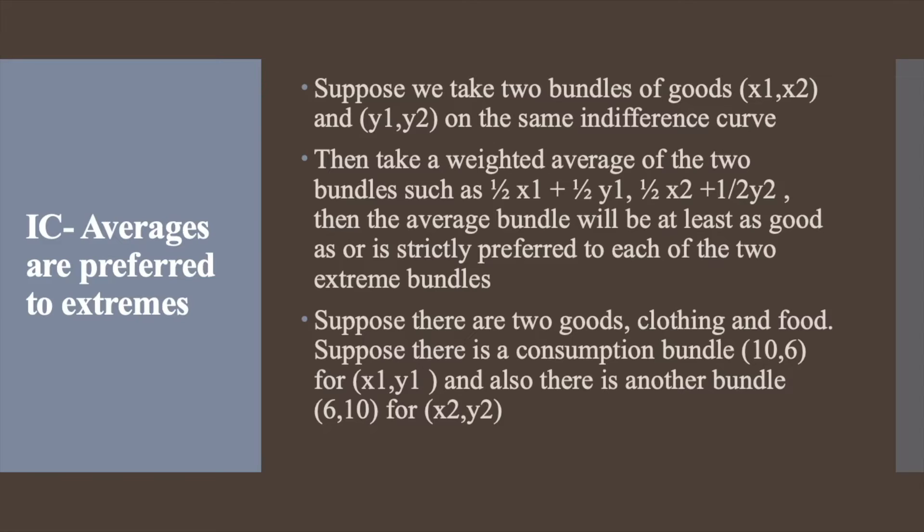Suppose there are two goods, clothing and food. There is a consumption bundle (10,6) for (x1, y1) where there is 10 units of clothing and 6 units of food, and also there is another bundle (6,10) for (x2, y2) where there is 6 units of clothing and 10 units of food. Here, one bundle contains 10 units of food and other contains 6 units of food. The same is the case with clothing. One contains 6 units of clothing and the other bundle contains 10 units of clothing.